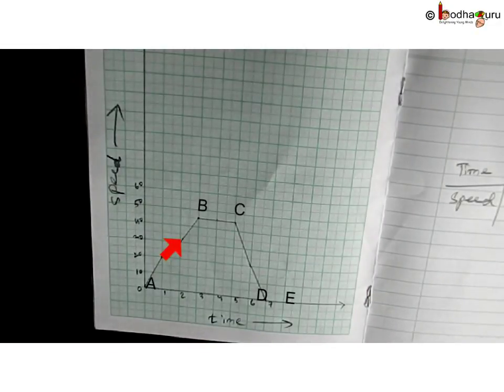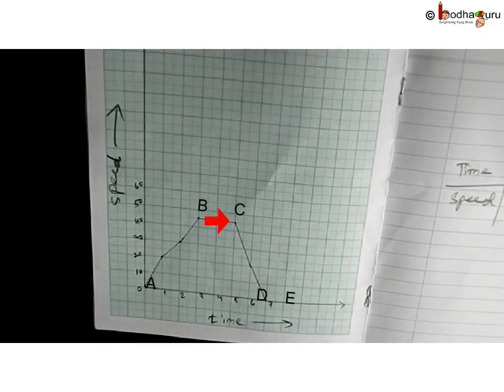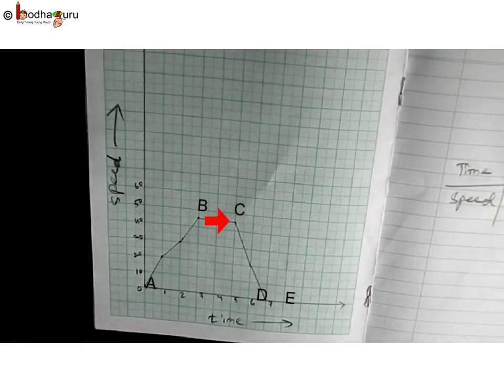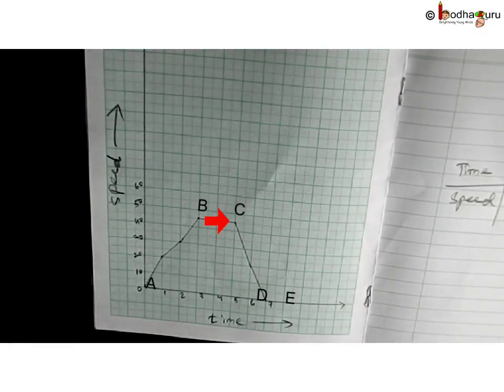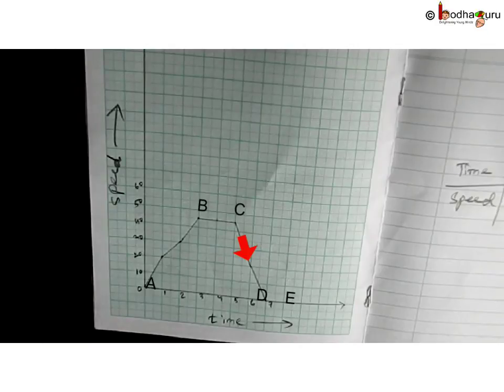The graph portion AB represents rising speed, means acceleration. The graph portion BC, which is parallel to x-axis, means you may be at the straight road with no traffic, so you are moving at a constant speed, that is zero acceleration. Then your speed starts dropping again down from point C, means you are facing traffic, so you are decelerating.